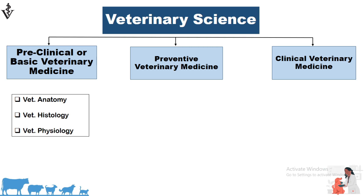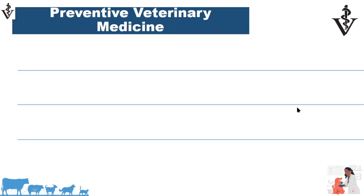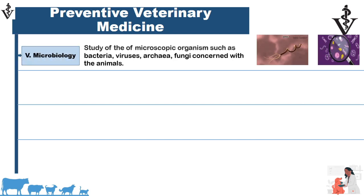The second branch is preventive veterinary medicine. In this we study subjects concerned with the health of animals, such as the different types of causative agents which cause diseases in animals, how they produce disease, how we can treat them. The subjects included in preventive veterinary medicine are veterinary microbiology, veterinary parasitology, veterinary pharmacology, and veterinary pathology.